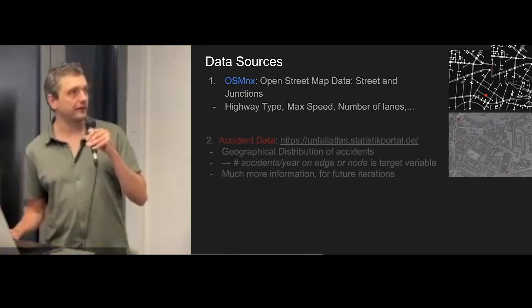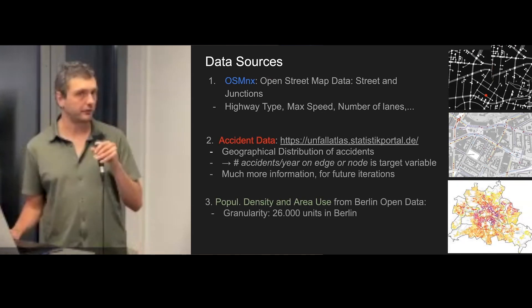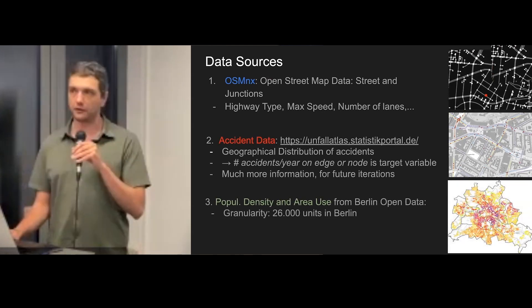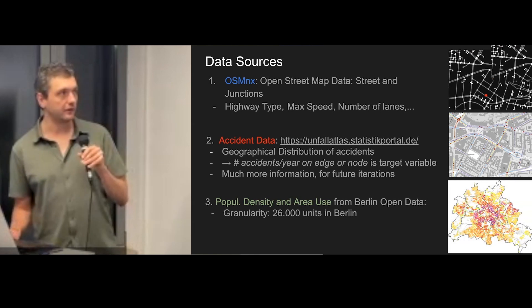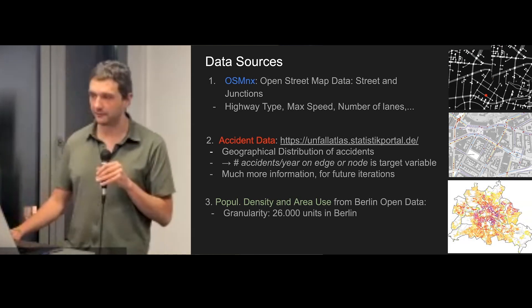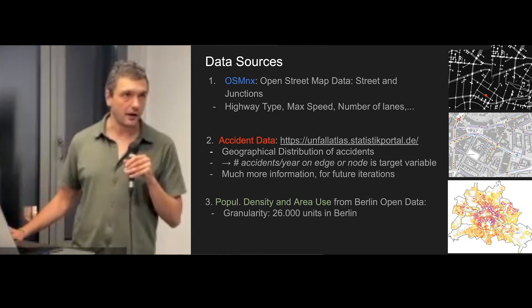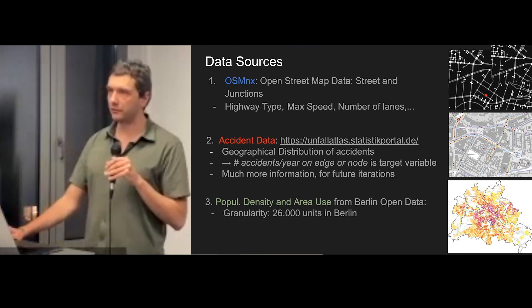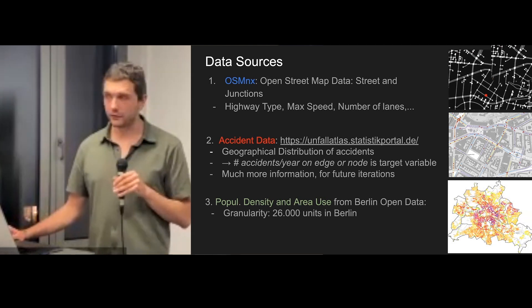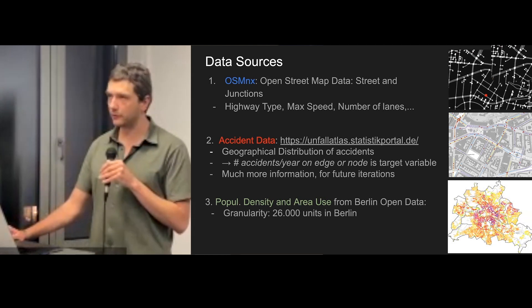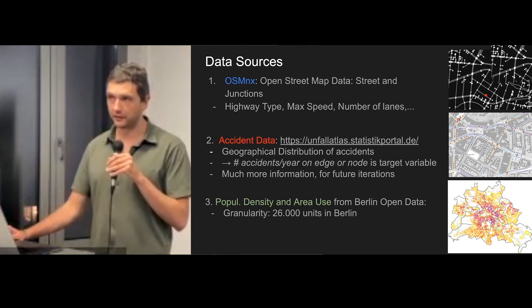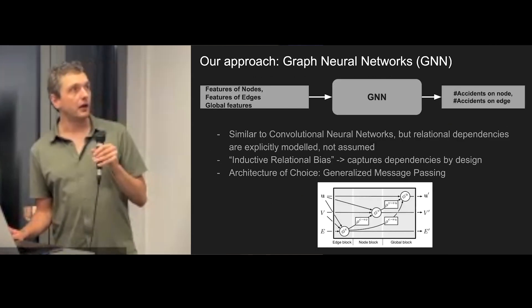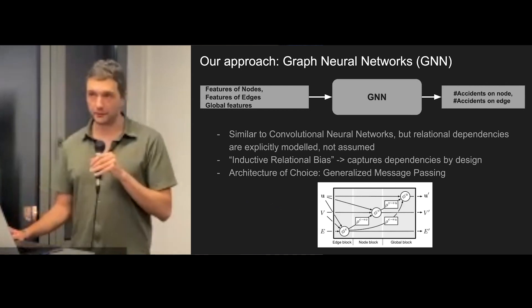These three data sources — OSMnx, the accident data, and the population density — also informed our choice of algorithm to analyze and predict accidents, which is graph neural networks.